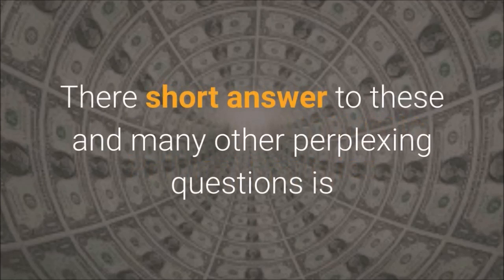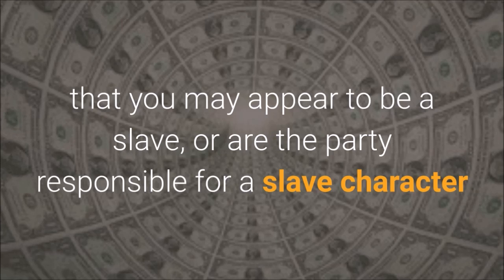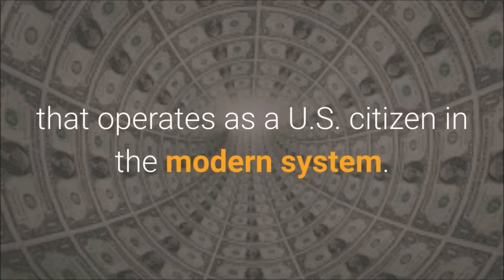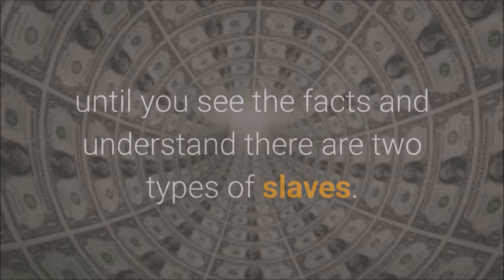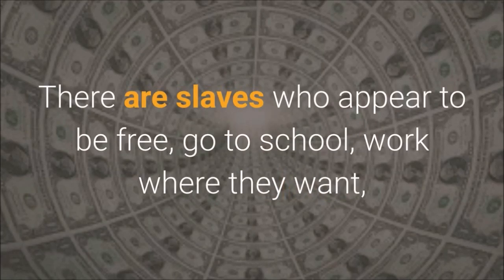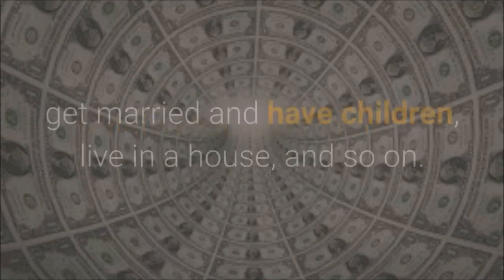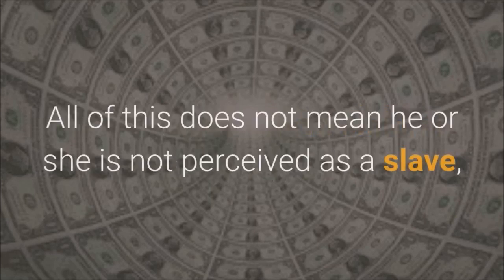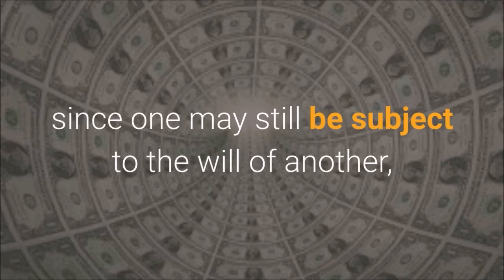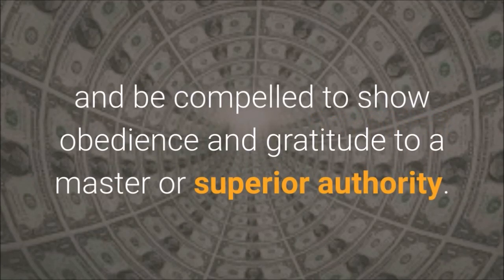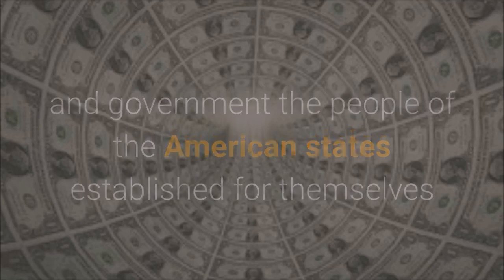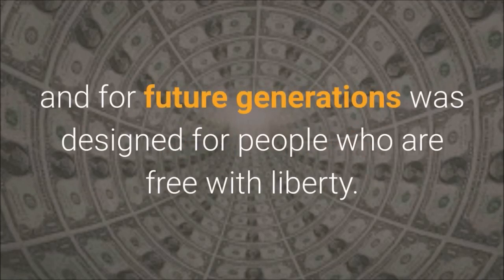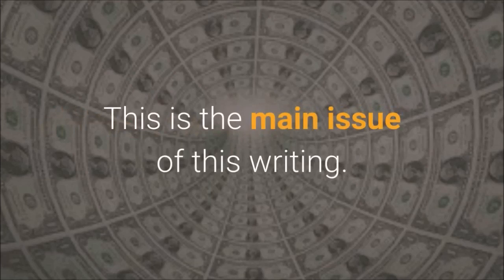The short answer to these and many other perplexing questions is that you may appear to be a slave, or are the party responsible for a slave character that operates as a U.S. citizen in the modern system. I know that sounds preposterous, even impossible, until you see the facts and understand there are two types of slaves. There are slaves who appear to be free — go to school, work where they want, receive consideration for their labor or industry, get married and have children, live in a house, and so on. All of this does not mean he or she is not perceived as a slave, since one may still be subject to the will of another, and be compelled to show obedience and gratitude to a master or superior authority. The type of state and government the people of the American states established for themselves and for future generations was designed for people who are free with liberty. Have those institutions been replaced with quite different versions designed for a society of slaves? This is the main issue of this writing.